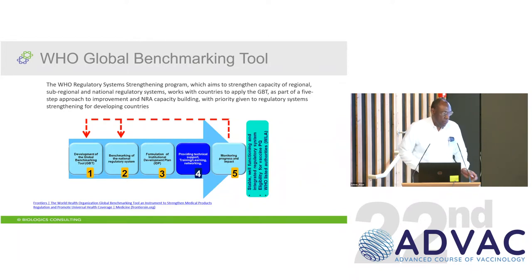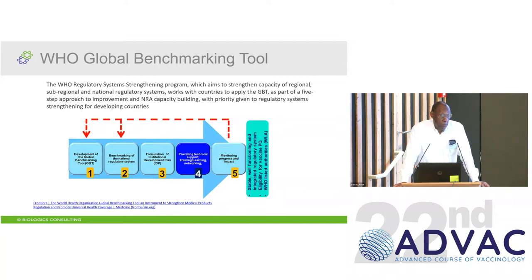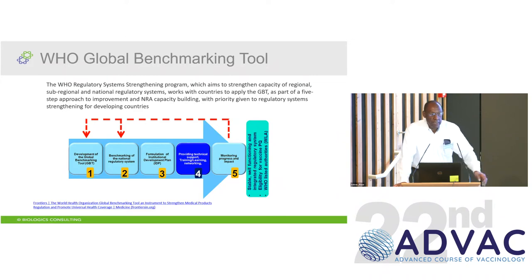The WHO created a Global Benchmarking Tool, established in 1997, used to evaluate and strengthen regulatory programs. It aims to strengthen the capacity of regional, sub-regional, and national regulatory authorities through a five-step approach to capacity building, with priority given to regulatory systems strengthening for developing countries. However, this tool is used for all regulatory authorities — the US FDA has also gone through this evaluation — so everybody is assessed to make sure the regulatory process remains strong and consistent.